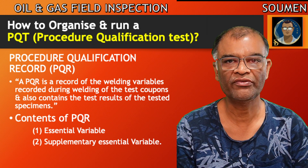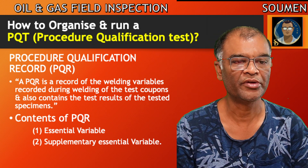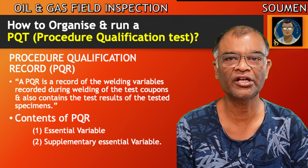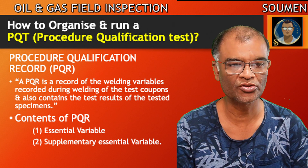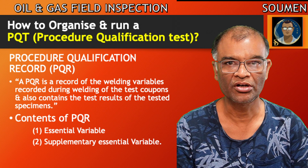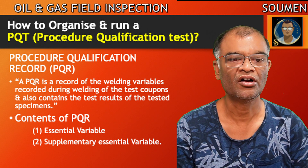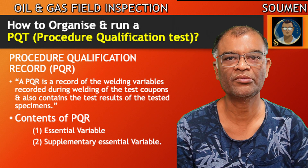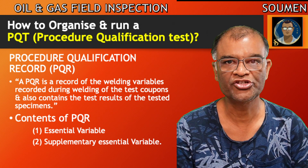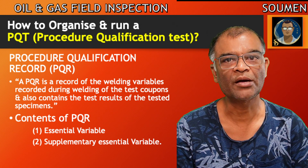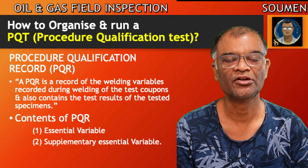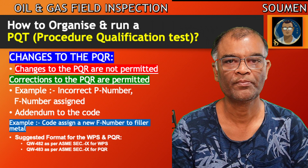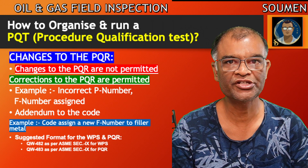A PQR is a record of the welding variables recorded during welding of the test coupons, and it also contains the test results of the tested specimens. The basic contents of a PQR are essential variables and supplementary essential variables when required.